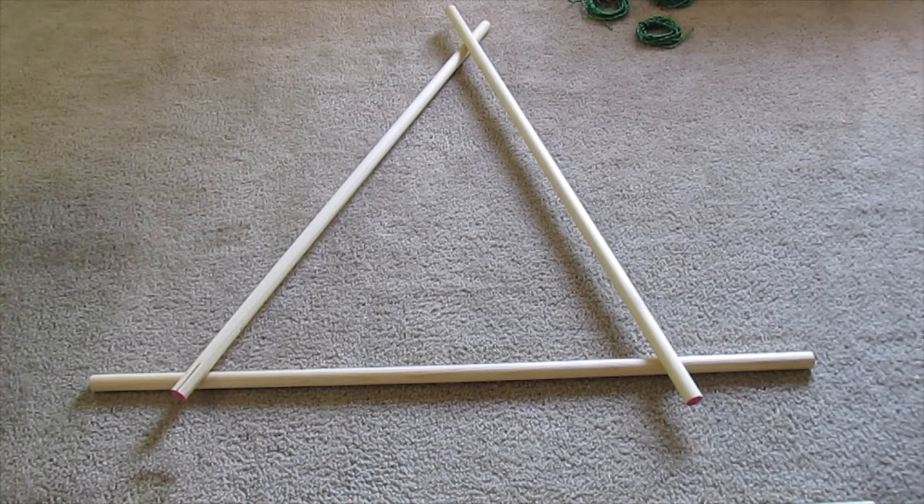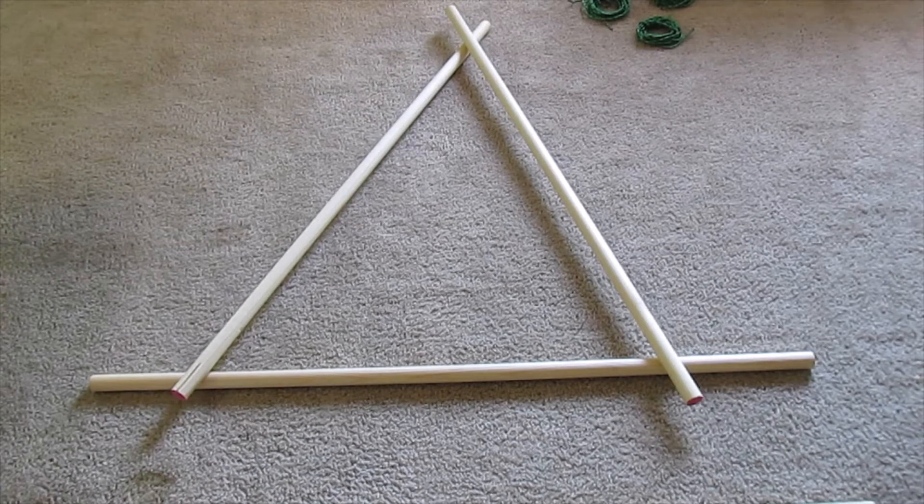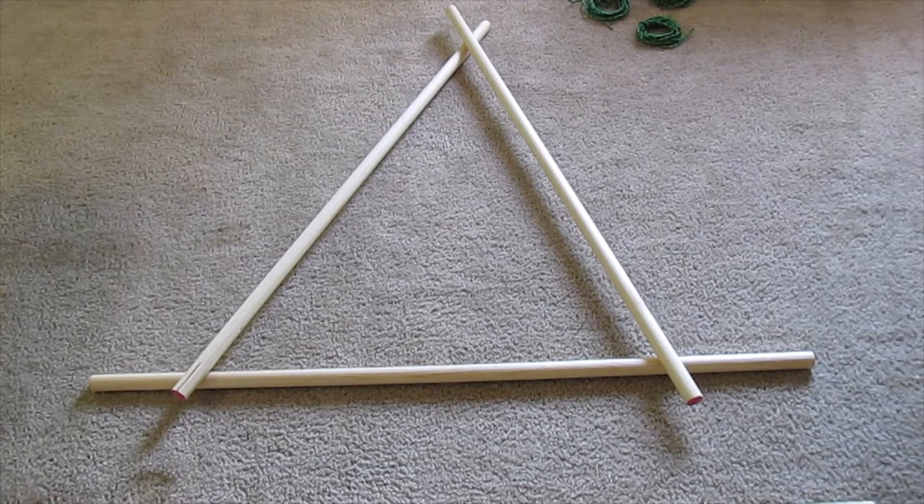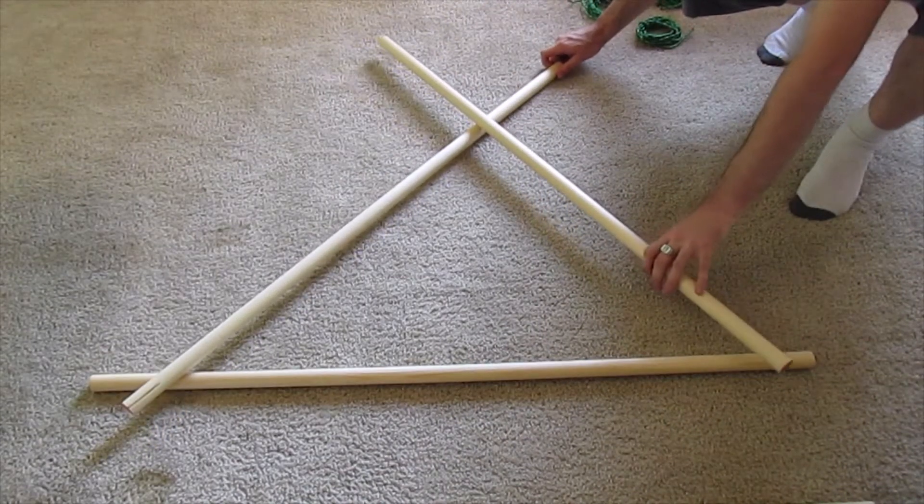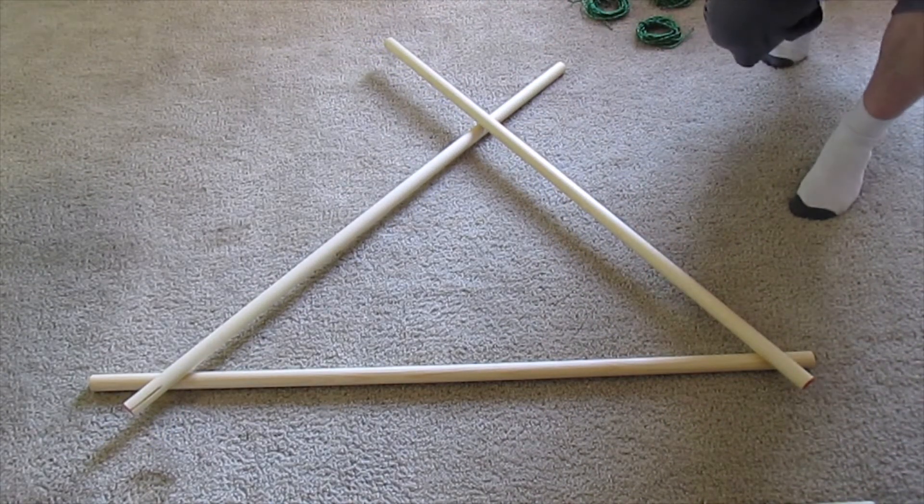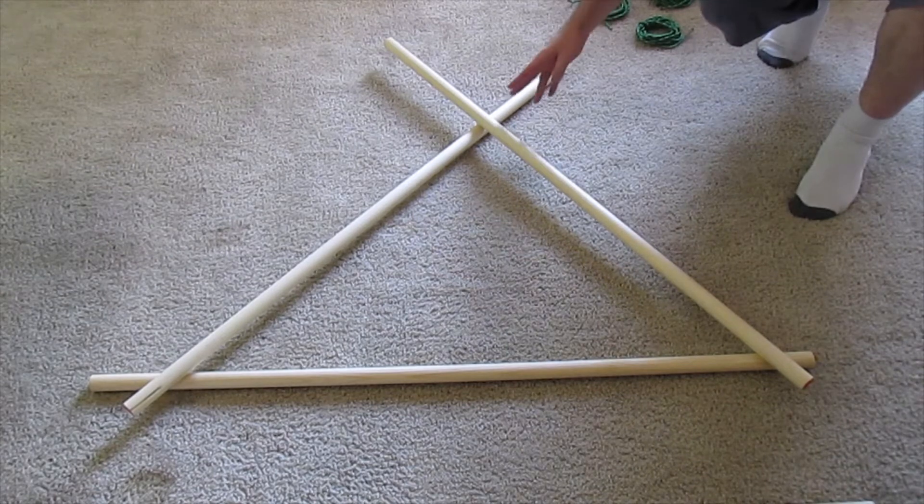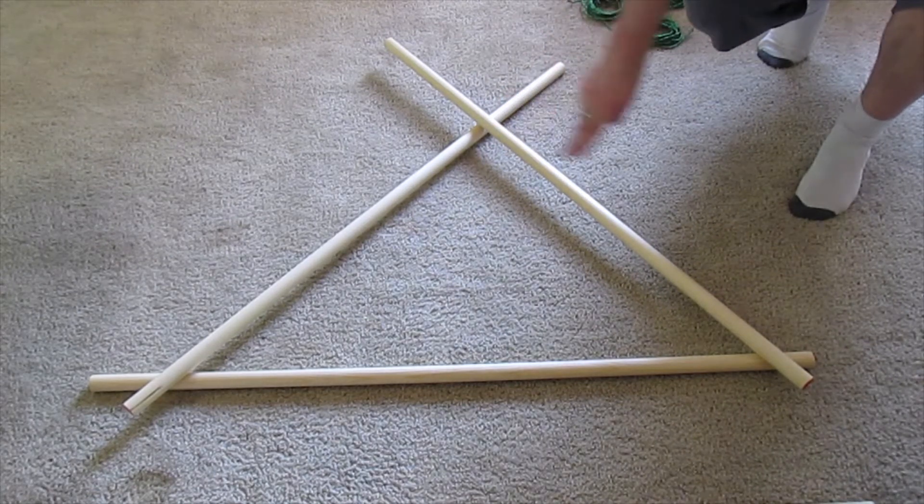In the X trestle, sometimes you can get away with using three square lashes. The reason for that is if these poles are more of a 90 degree angle shape, you just use a square lashing here and then square lashing on either side back there.